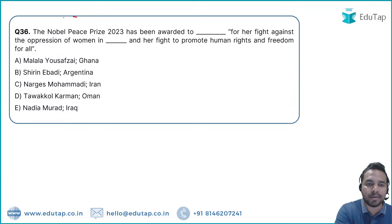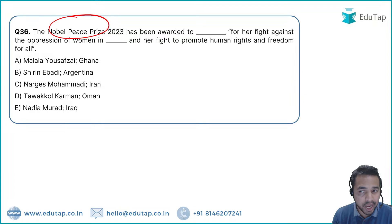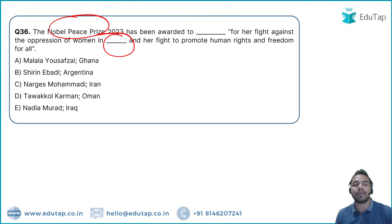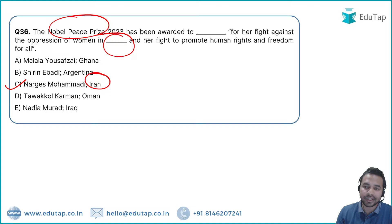Question 39: The Nobel Peace Prize 2023 was awarded to Narges Mohammadi for her fight against the oppression of women in Iran and her work to promote human rights. Iran is the country where she has fought for women's rights.